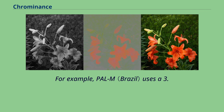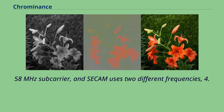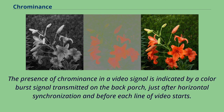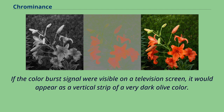For example, PAL-M uses a 3.58 MHz subcarrier, and SECAM uses two different frequencies, 4.250 MHz and 4.40625 MHz above the video carrier. The presence of chrominance in a video signal is indicated by a color burst signal transmitted on the back porch, just after horizontal synchronization and before each line of video starts. If the color burst signal were visible on a television screen, it would appear as a vertical strip of a very dark olive color.